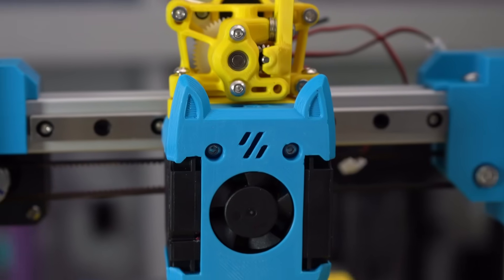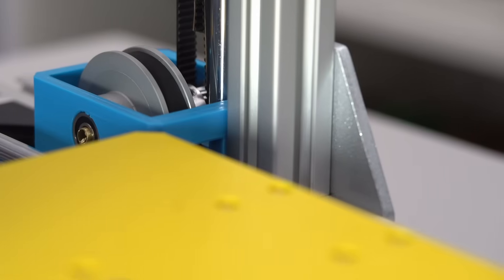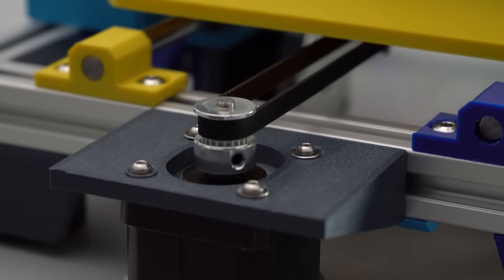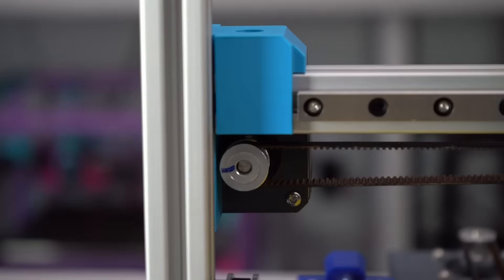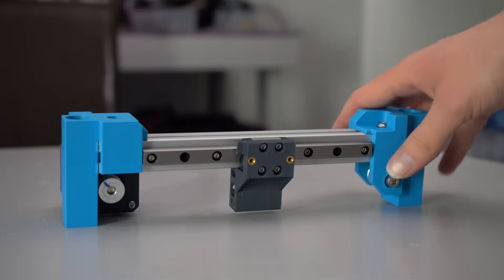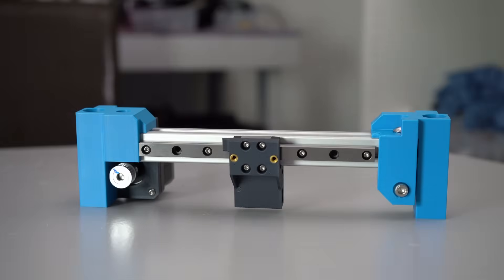This is Cappy, Rolo's tiny, easy-to-build bedslinger. Cappy was designed to be an approachable, simple project for beginners looking to get into DIY 3D printing.